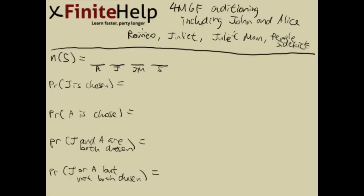Now let's start filling in the numbers. The number of slots you have equals the number of distinct roles. Each slot represents a role — here we have four roles, so we have four slots. The number that goes on each slot represents the number of possibilities that role can be filled by from our pool.